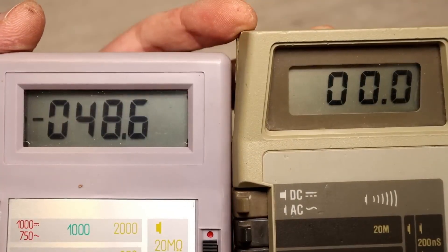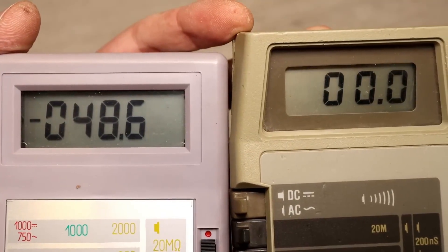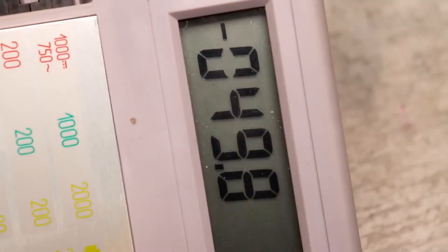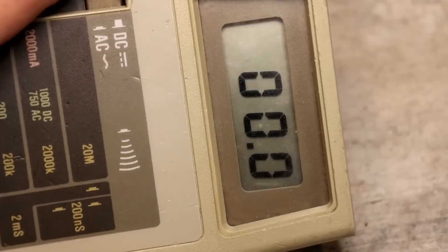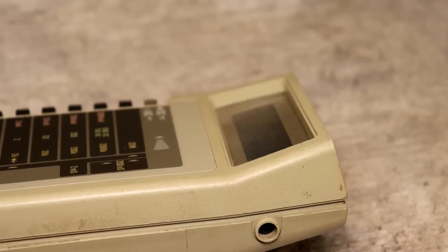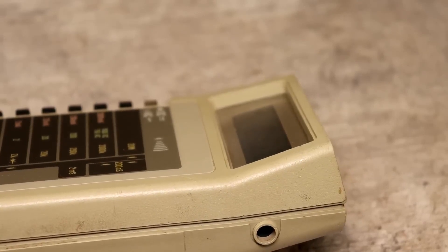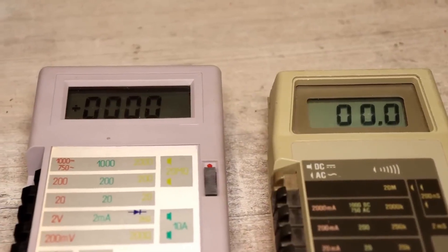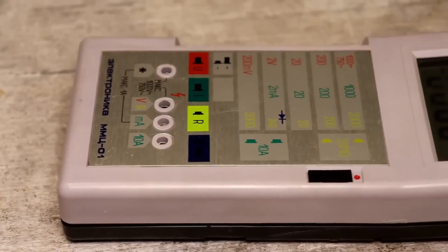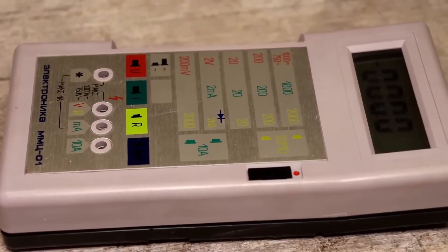Display. Here, the fluke definitely leads despite having a smaller display. Firstly, the contrast readability and viewing angles are much better than those of the electronics. Additionally, it is positioned at an angle. It always faces the operator during work, whereas the electronics seem to always face upwards.